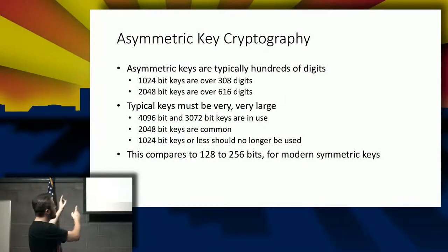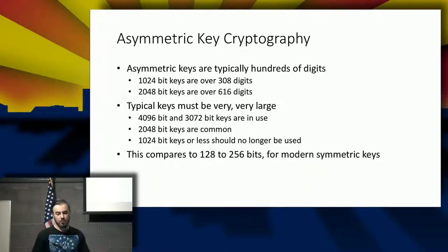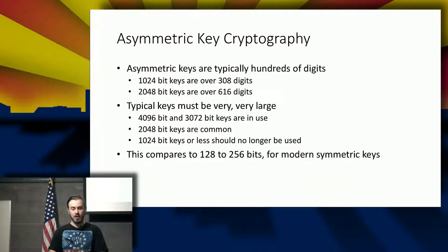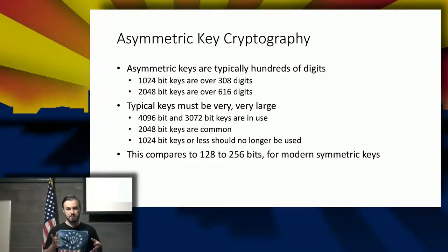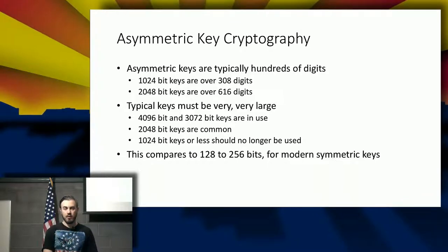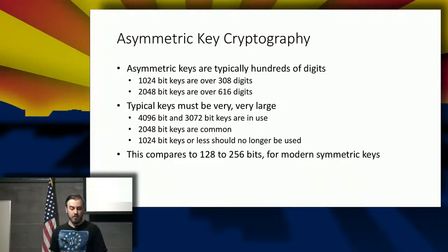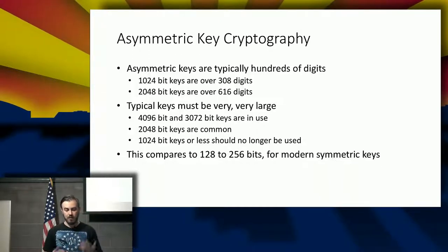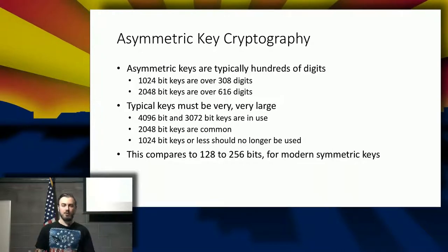Let's talk about the bits and bytes. 1024-bit keys are over 308 digits. 2048-bit are over 616 digits. Unlike block cipher keys, the keys in public cryptography have to be a lot larger. Instead of 256 bits like AES uses as the normal standard, we have to do things like 4096, 3072. 2048 is less common and shouldn't be used. 1024, definitely don't use. This compares to the size of the keys we had beforehand with modern symmetric keys. We have to have a lot more data to make these keys because of the math involved in randomization.